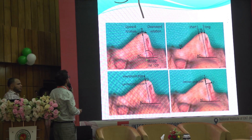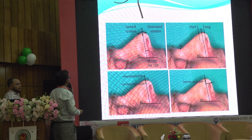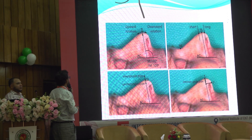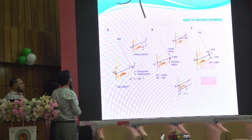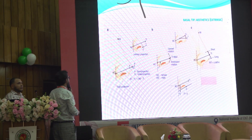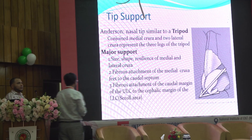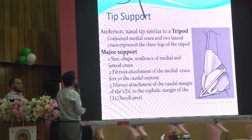The tip angle is 100 degrees in males and 105 degrees in females. It can be upward or downward rotated along the dorsal line. Tip projection is drawn from the alar crease to the tip point and can be overprojected or underprojected.